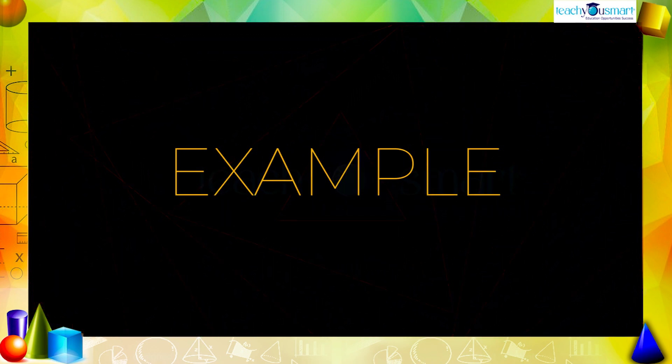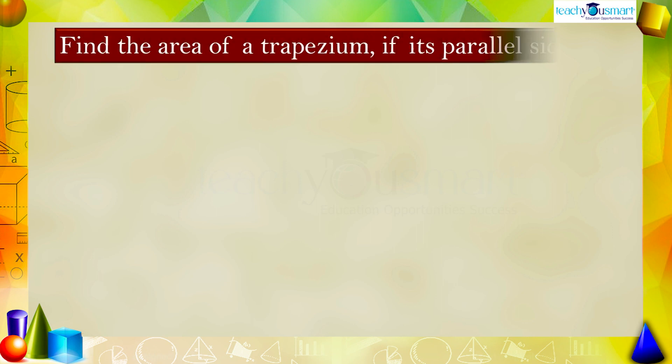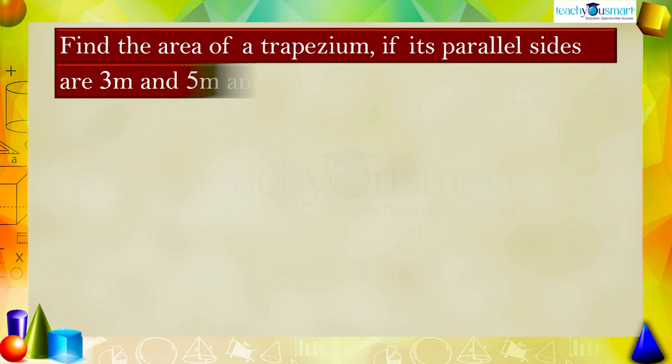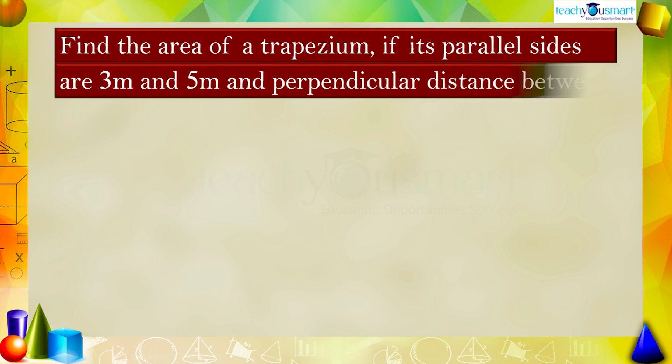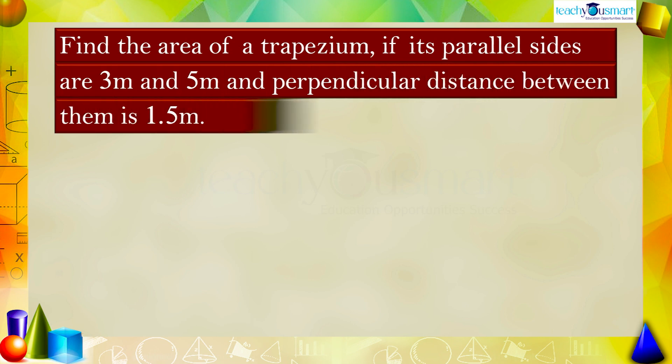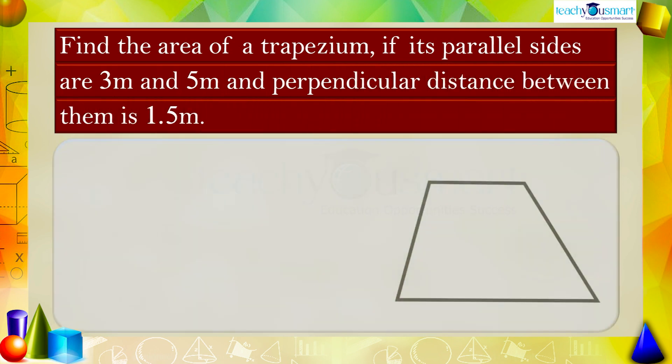Let's see an example. Find the area of a trapezium if its parallel sides are 3 meters and 5 meters and the perpendicular distance between them is 1.5 meters. Let the trapezium be named as PQRS with PQ parallel to SR.